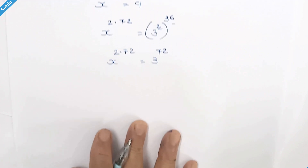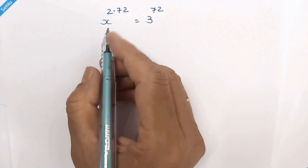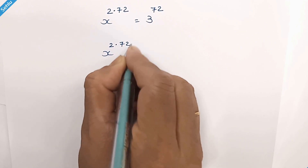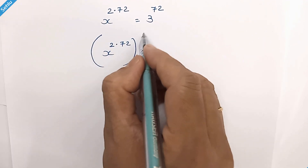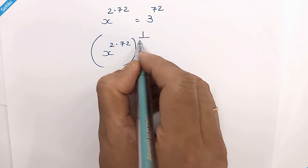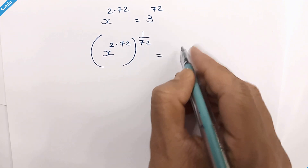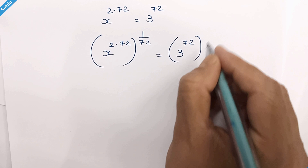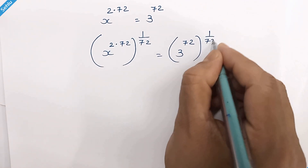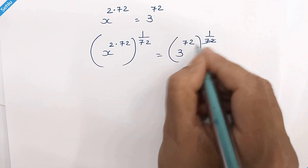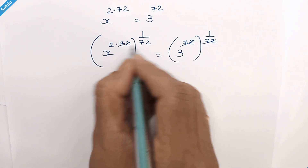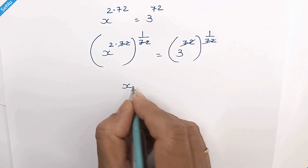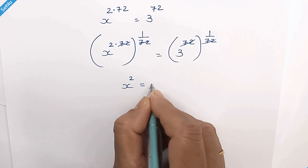In the next step, we will raise 1 over 72 as an exponent on both sides. This 2 can multiply, so this 2 gets cancelled out and this 2 gets cancelled out. Now we have x squared is equal to 3.